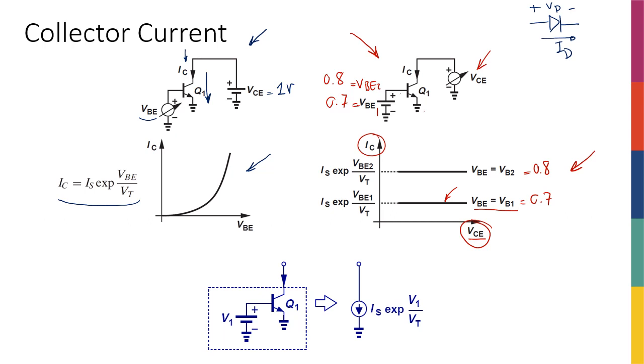So another terminal, the base emitter terminal, the base emitter junction is controlling my IC, but the collector emitter voltage, which is basically closer to the IC, is not really changing the IC at all. So this is very different from whatever we have seen before.